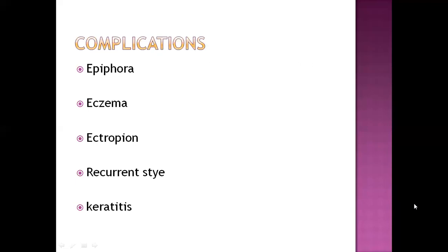Complications of blepharitis include: epiphora — presence of excess fluid passing out of the eye, especially from the upper part. Eczema — skin infection around the eye. Ectropion — outward movement of the eyelid. Recurrent stye can form because of infection, with growth of microorganisms again and again if the antibiotic course is not completed. Also, keratitis — inflammation of the cornea — can be one of the complications.